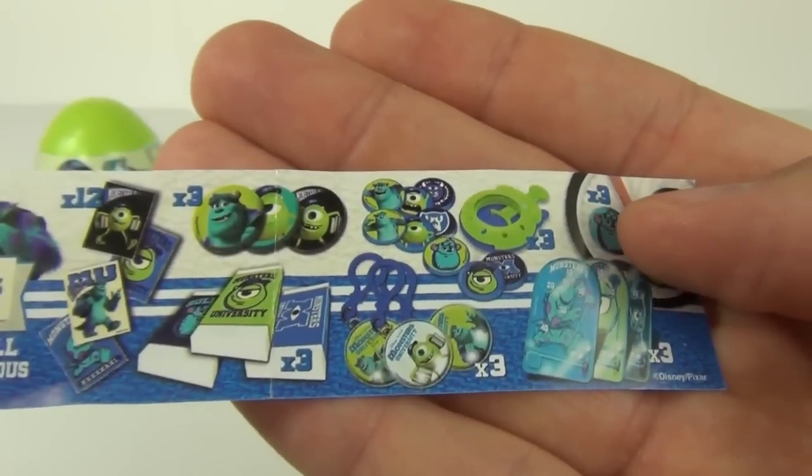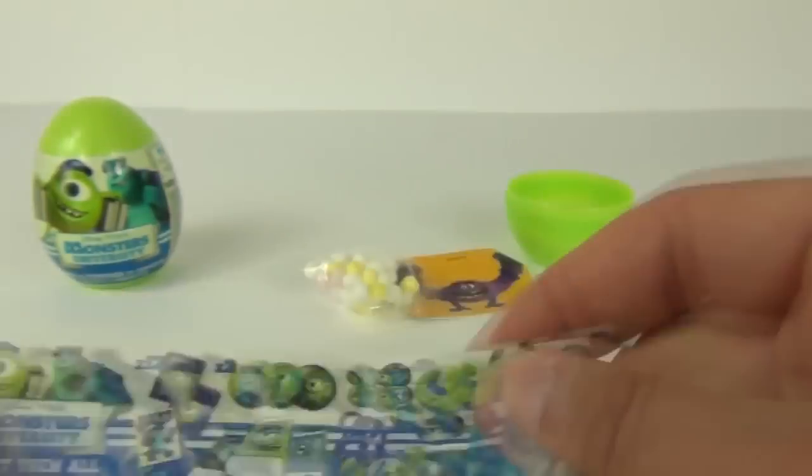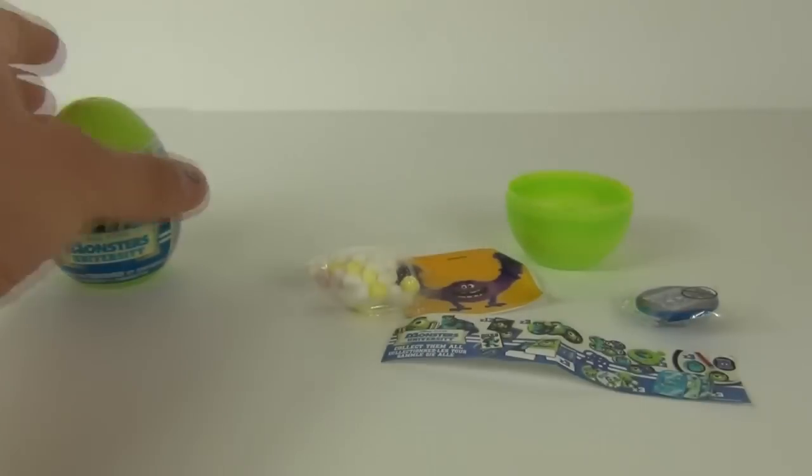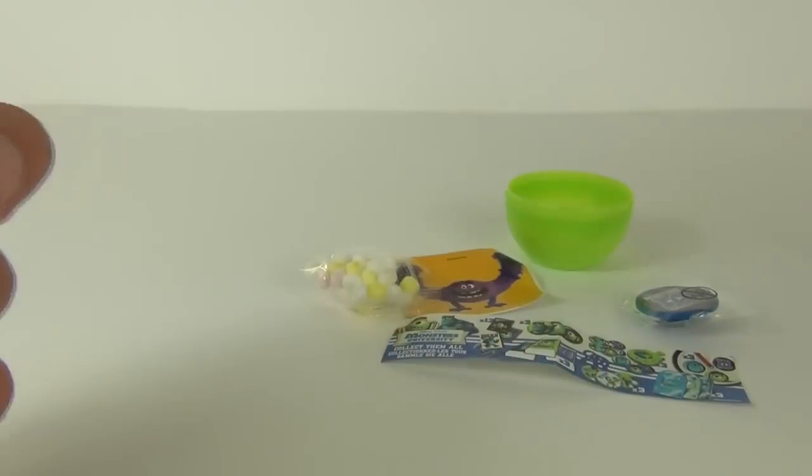So there are a few different things, keychains, rubbers, badges and all kinds of things. So let's have a look at our second egg.